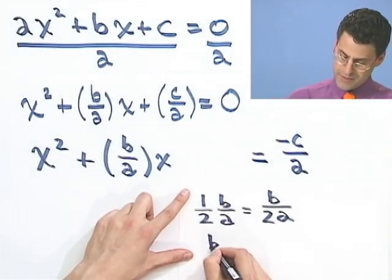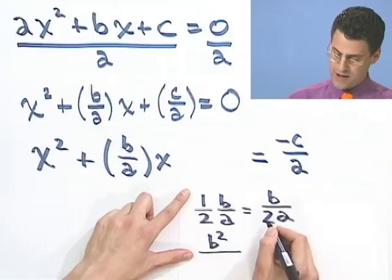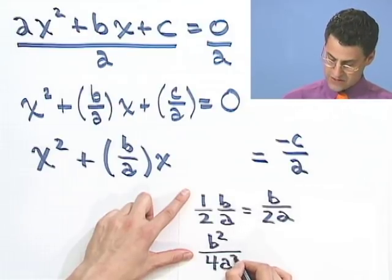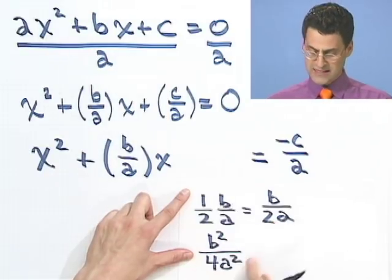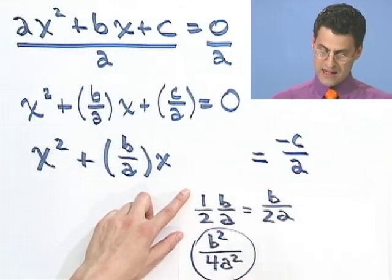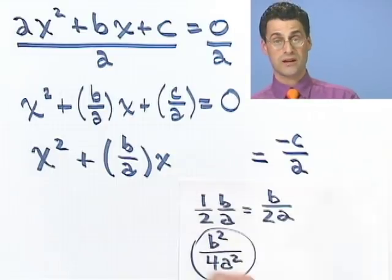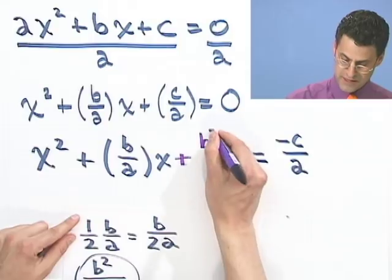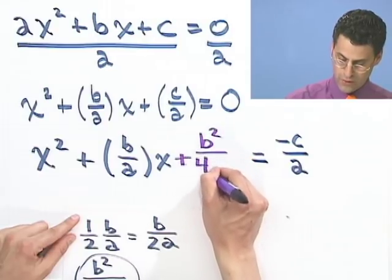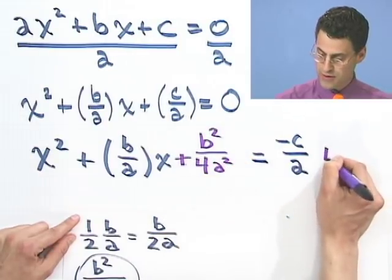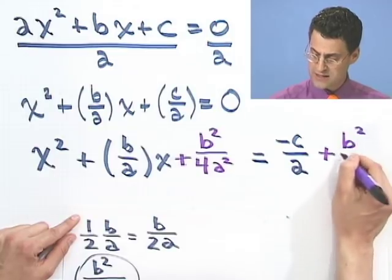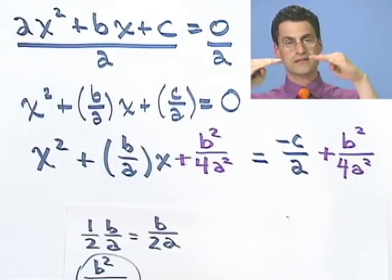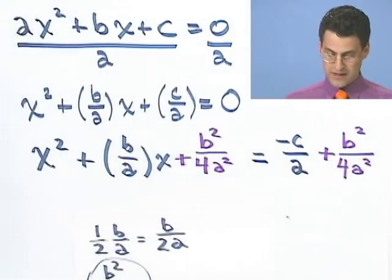So if I square that, I'll see b squared divided by, and if I square the bottom, I would see 4a squared. I squared the 2 and I squared the a. That's the value that I'm going to want to add to both sides of this to complete the square. So I'm going to now add plus b squared over 4a squared to both sides. Adding it to both sides means I'm not changing the equalness of this. Everything balances out perfectly.